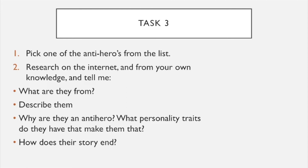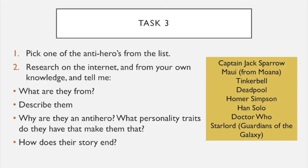Here's your next task. I'm going to put up a list of anti-heroes from famous films — I've tried to include a range of genres that you will know. You're going to research that character on the internet or from your own knowledge, and tell me: what are they from, describe them, why are they an anti-hero, what personality traits make them that, and how does their story end? This can be bullet points or a paragraph. The list includes: Captain Jack Sparrow, Maui from Moana, Tinkerbell, Deadpool, Homer Simpson, Han Solo, Doctor Who, and Star Lord from Guardians of the Galaxy. All of these have been heroic and saved the day, but none of them are outright heroes — they're not superheroes.